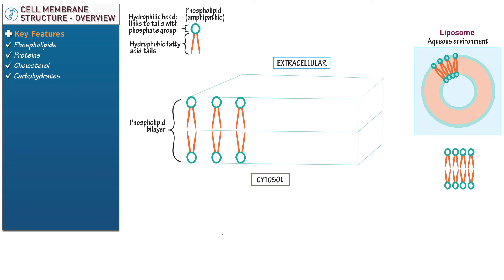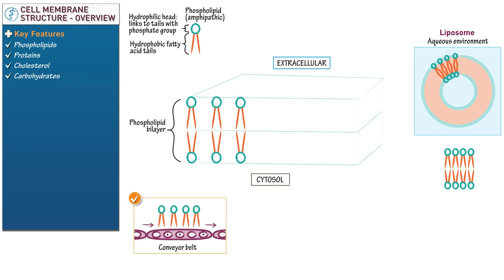Now let's return to our cell membrane. Draw a conveyor belt to show that the molecules in our bilayer move laterally in the membrane as if on a conveyor belt. Indicate that our bilayer is fluid — adjacent phospholipids change positions about 10 million times per second, and their weak hydrophobic interactions allow them to drift.